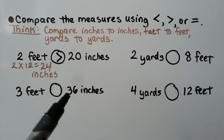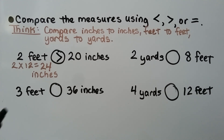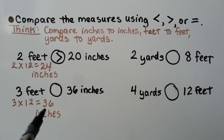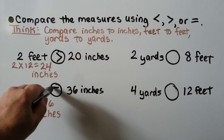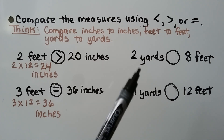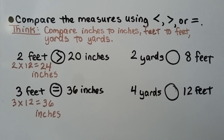Next, we compare three feet to 36 inches. There are 12 inches in each foot, so three feet times 12 equals 36 inches — and 36 inches equals 36 inches. Then we compare two yards to eight feet. There are three feet in each yard, so we multiply two times three to get six feet. Six feet is less than eight feet, so two yards is less than eight feet.